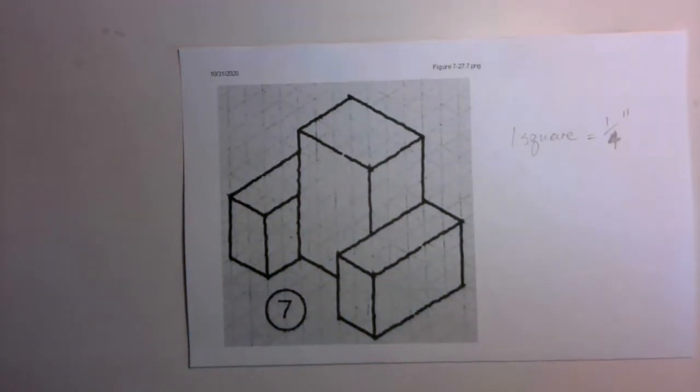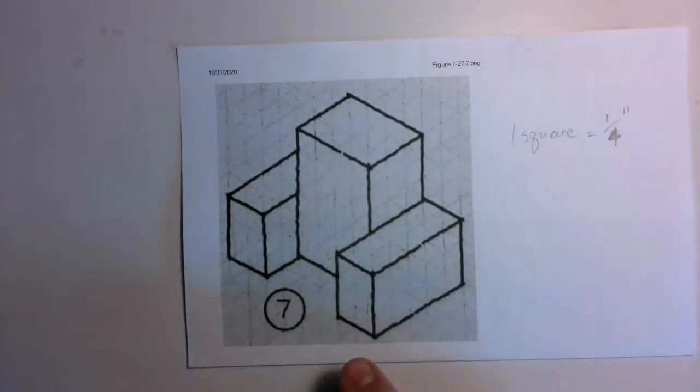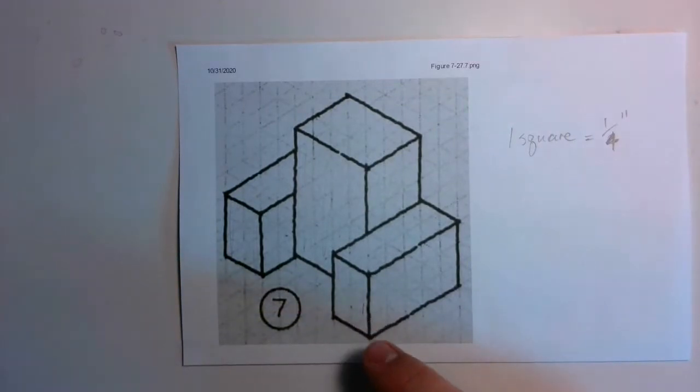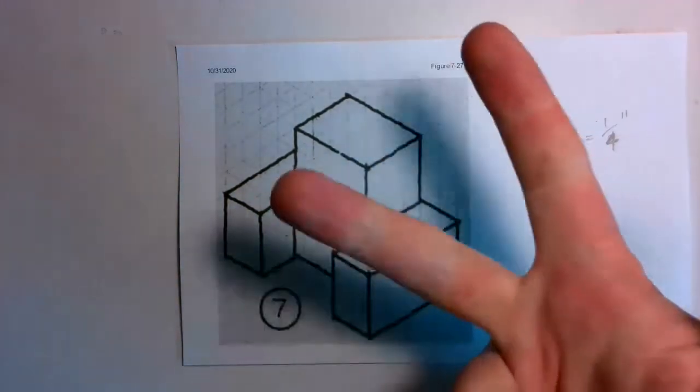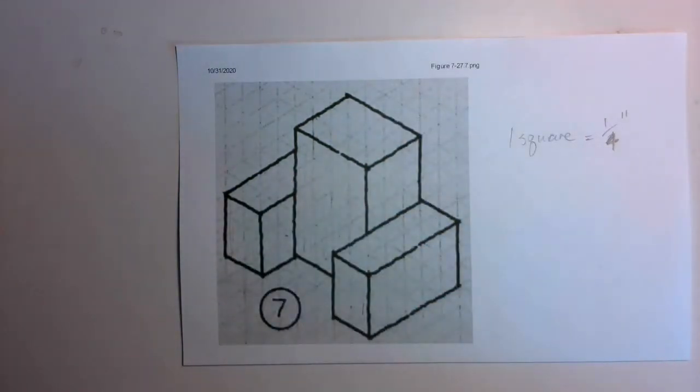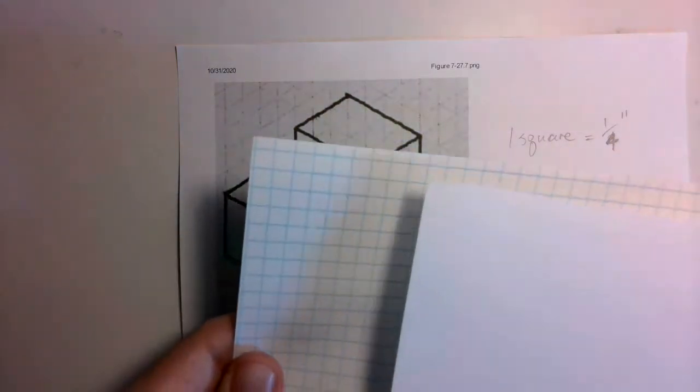Okay folks, so this video is going to show how we can sketch an object like this in three views: a front view, a top view, and a right side view. And what it is going to use to do that is some graph paper. Specifically, we'll put some white paper over top of graph paper.